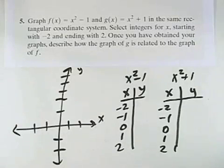Graph f(x) = x² - 1 and g(x) = x² + 1 in the same rectangular coordinate system, selecting integers for x, starting with -2 and ending with 2. Once we've obtained the graphs, describe how the graph of g is related to the graph of f.